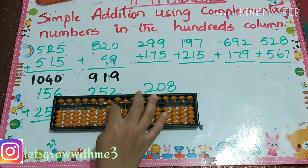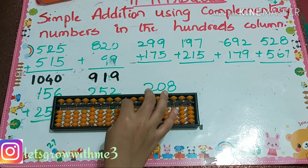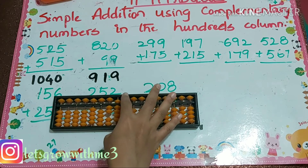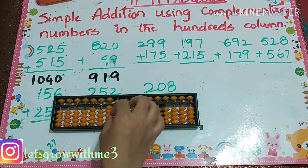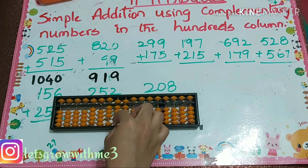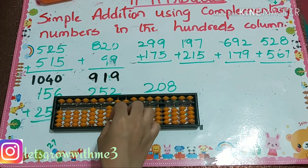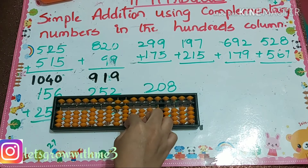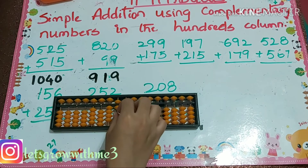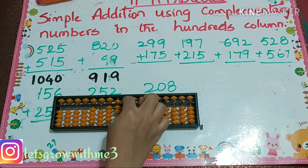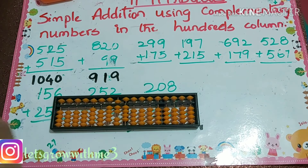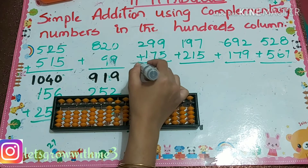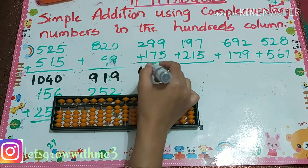Next problem: 299 plus 175. How to add 7? Plus 10 minus 3. And how to add 5? Plus 10 minus 5. Your answer is 474.